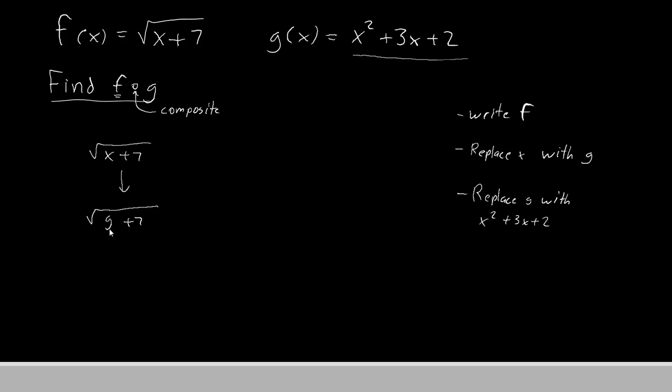So instead of writing g, we'll write this function. So our function then becomes this. Root of x squared plus 3x plus 2. And then the plus 7 that was not part of the g is also still there.